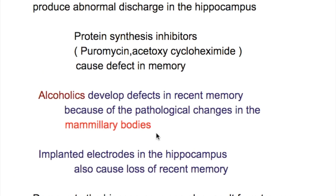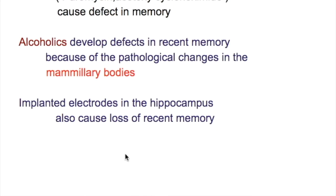Drugs that impair or alter recent memory produce abnormal discharges in the hippocampus. Protein synthesis inhibitors — puromycin and acetoxycycloheximide — cause defects in memory. Alcoholics develop defects in recent memory because of pathological changes in the mammillary body. Implanted electrodes in the hippocampus also cause loss of recent memory.